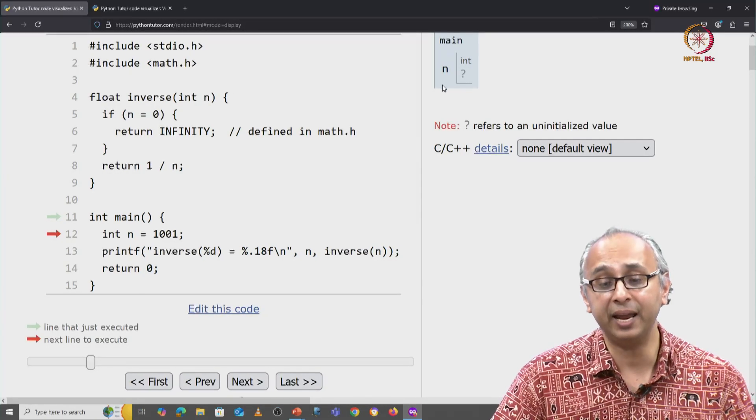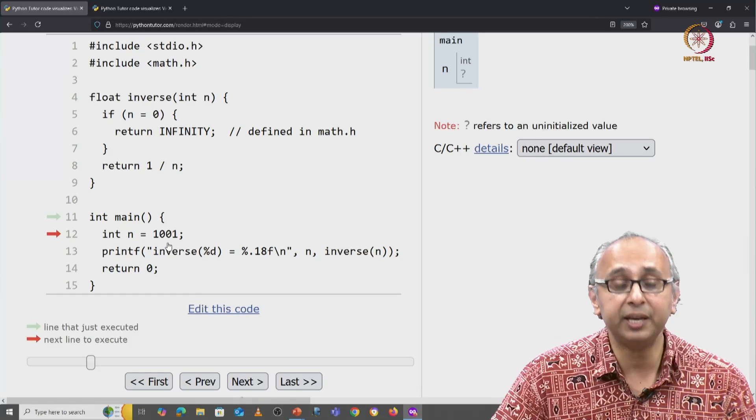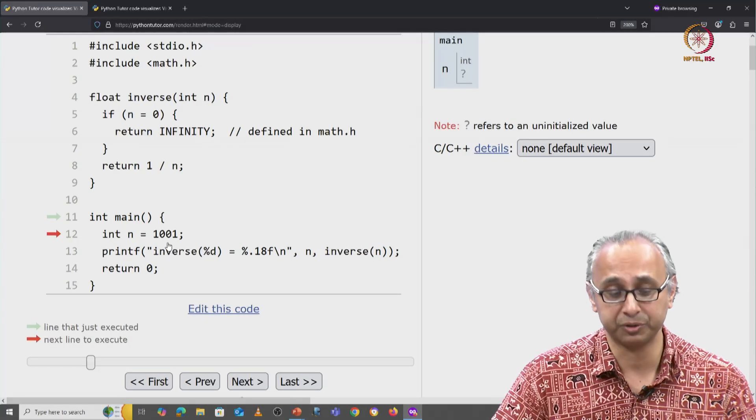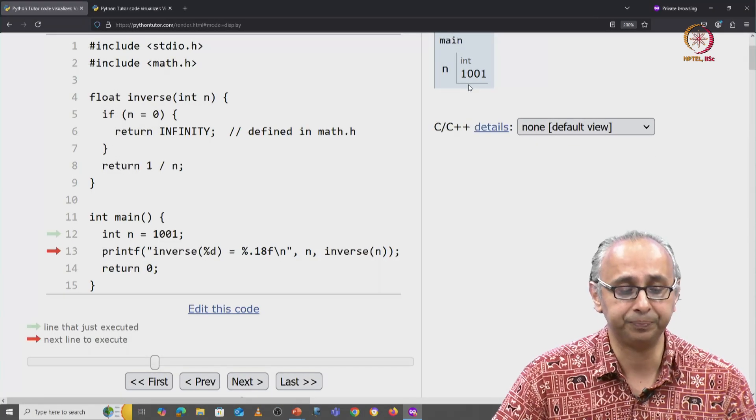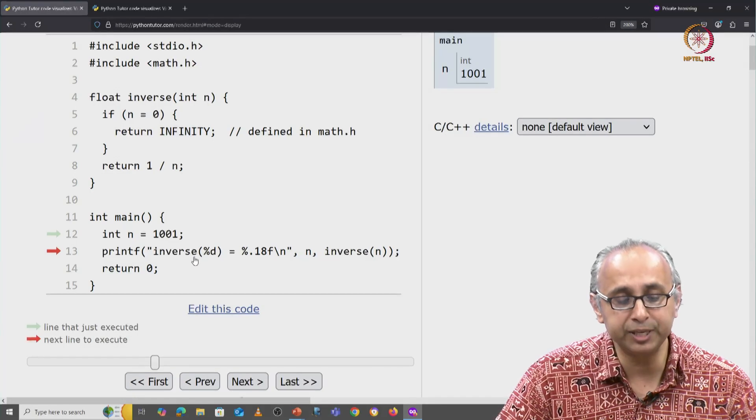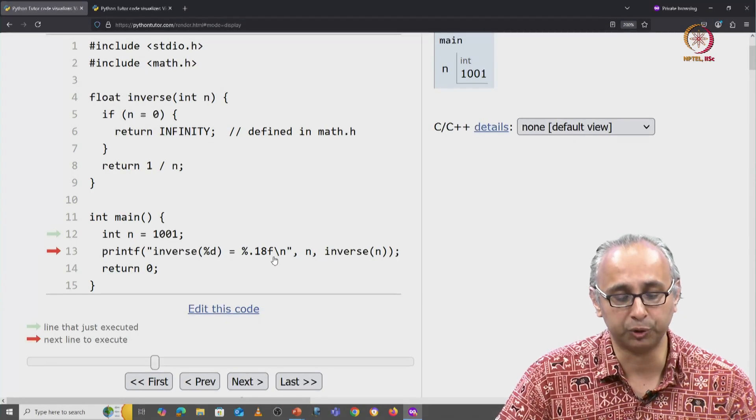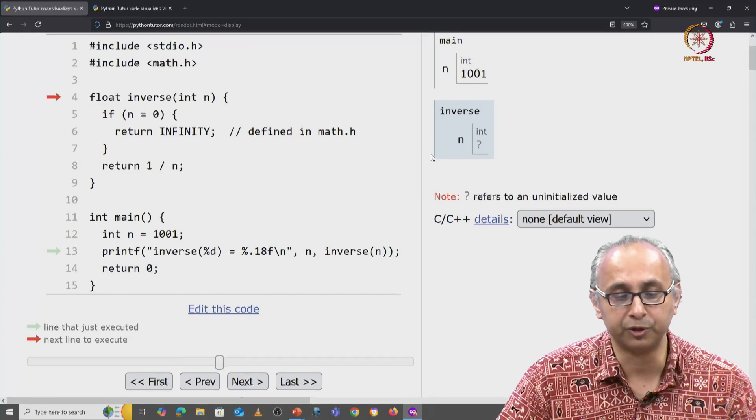But here we are initializing its value to 1001. So when we click on next, we see that value here. Now we're about to call the inverse function. I will explain this printf syntax in a short while. For now, let us jump to the inverse function.